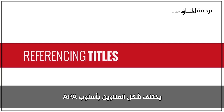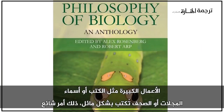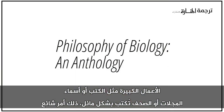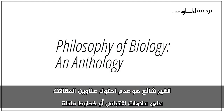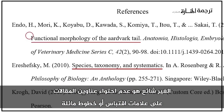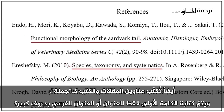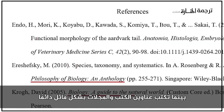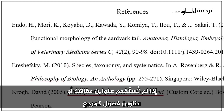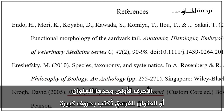Titles are done a bit differently in APA than in most other styles. Longer works like books, or names of journals or newspapers, are italicized, which is common. What's not so common is that the titles of articles do not have quotation marks or italics. Also, article and book titles are written out like a sentence, with only the first word of a title or subtitle capitalized. While book and journal titles are always italicized, only the first letter of the title or subtitle should be capitalized.